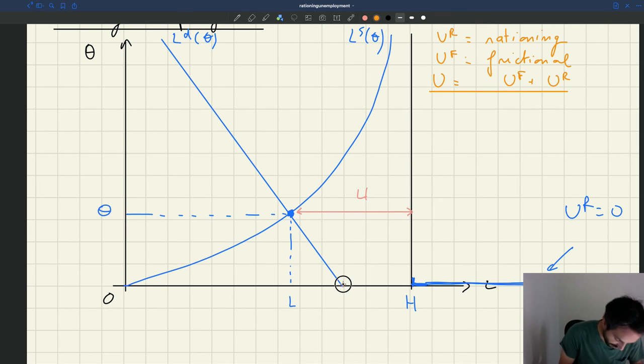And so how are we going to do it? Well, it's very simple. First, we look at the intercept here, so where the labor demand cuts the x-axis. And this quantity that we have here, the quantity, so the gap between the intercept and h, that's, as we had said before, that's just UR.